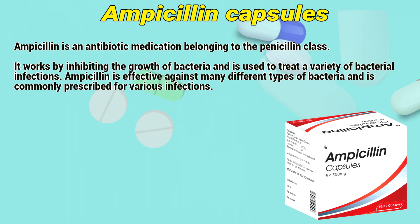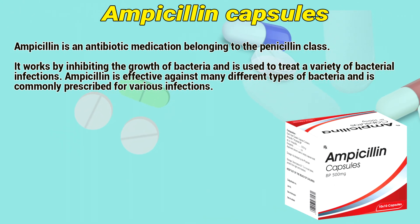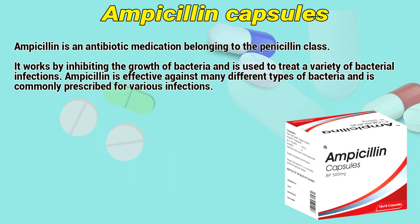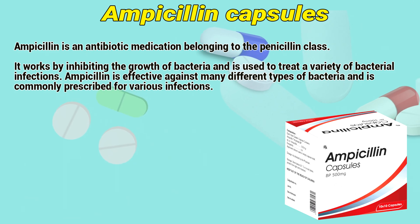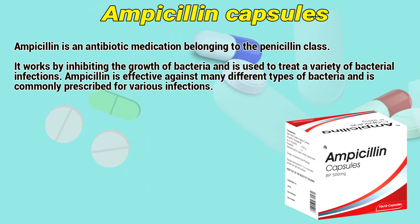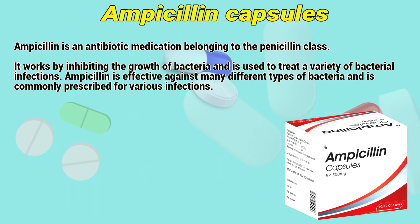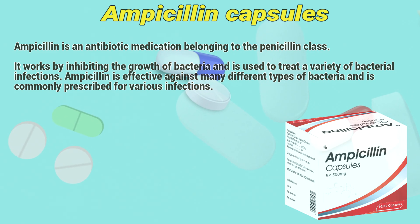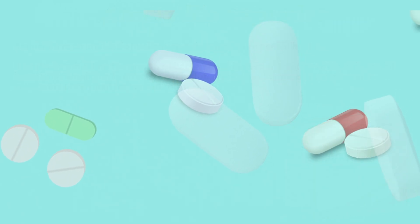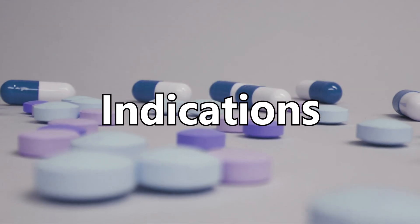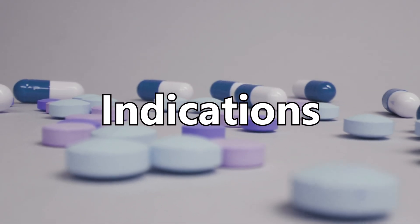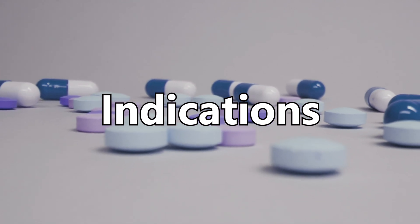Ampicillin is an antibiotic medication belonging to the penicillin class. It works by inhibiting the growth of bacteria and is used to treat a variety of bacterial infections. Ampicillin is effective against many different types of bacteria and is commonly prescribed for various infections.